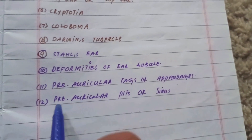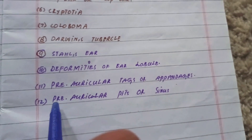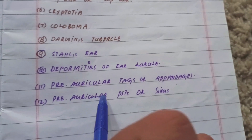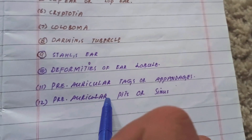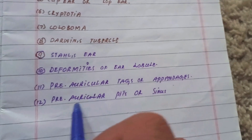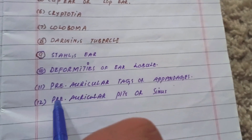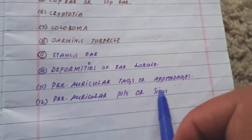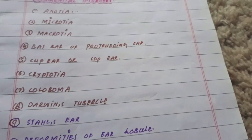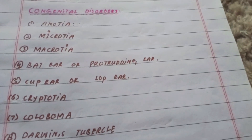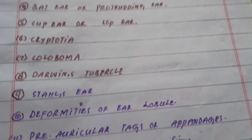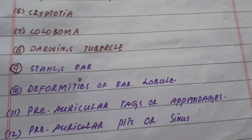Preauricular pits are small pits present on the crus of the helix. This condition is also known as preauricular sinus. That was all about the congenital anomalies of the external ear. For more videos, please subscribe, like, and share.